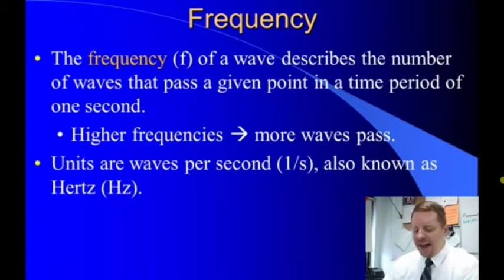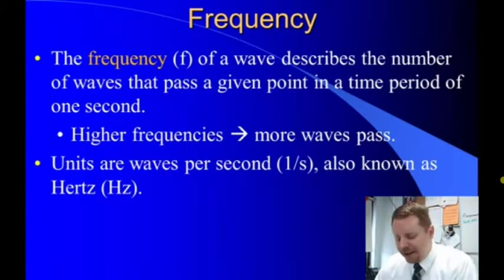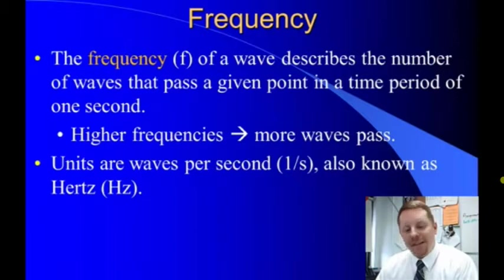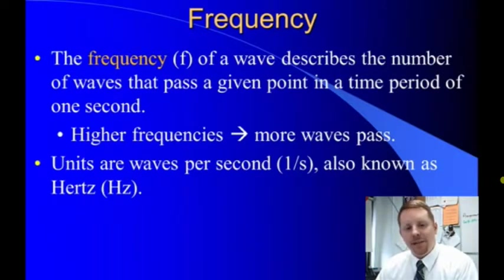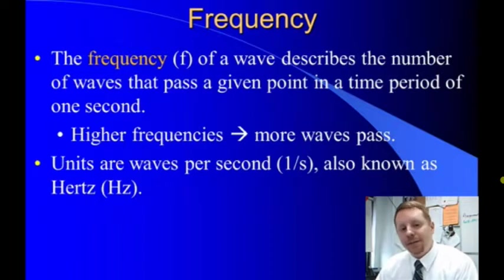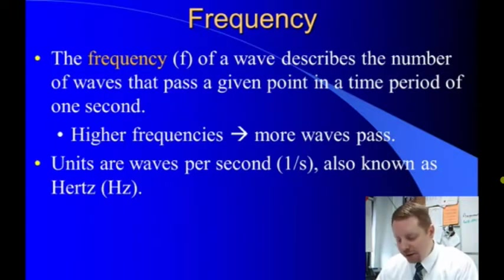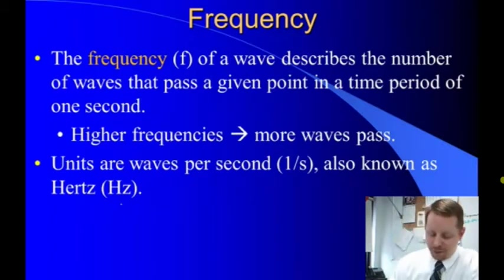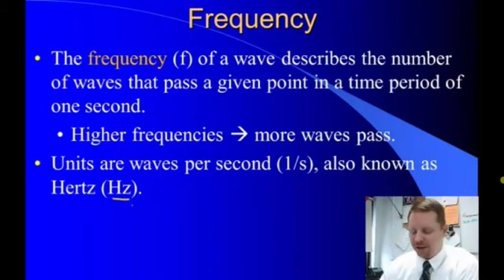Frequency F describes the number of waves that pass a given point in a time period of one second. So if you had five waves per second, your frequency would be five hertz. The units are one over seconds, or hertz, abbreviated with a capital HZ.